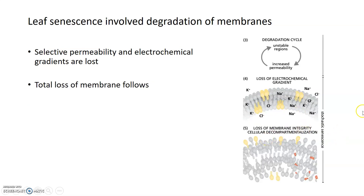At a certain point, there are so many holes within the membranes that they're no longer able to be selectively permeable, and they lose that ability. They also lose the ability to maintain any electrochemical gradients that exist across membranes. After that, the total membrane is basically disintegrated — there's a loss of membrane integrity — and a process known as cellular decompartmentalization occurs, where the organelles fragment and fall apart.